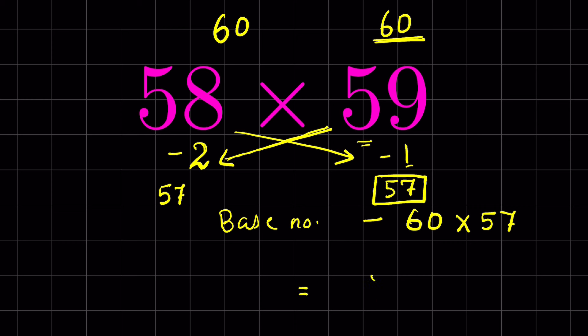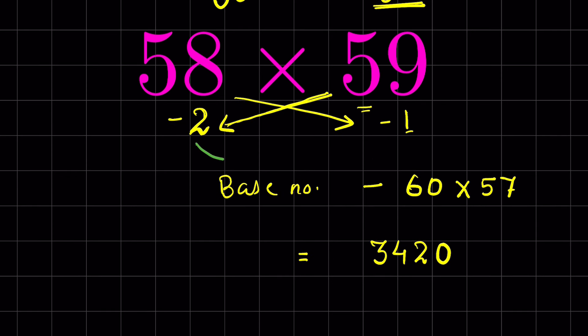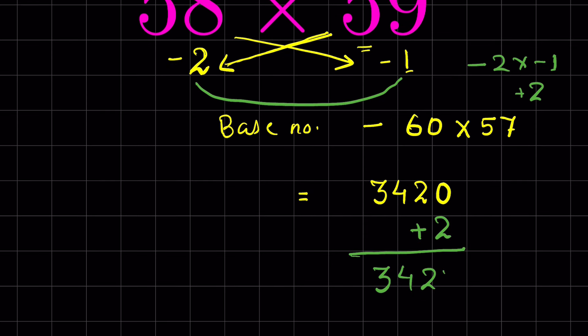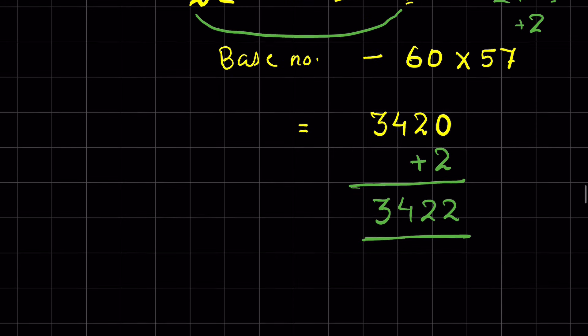Now the next step is you multiply the difference. That is minus 2 times minus 1. So negative negative is positive, so it will be positive 2. Since it's positive 2, we will add 2 here. So answer will be 3422. You can check in the calculator.